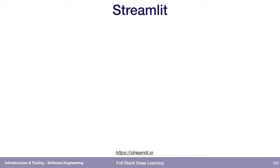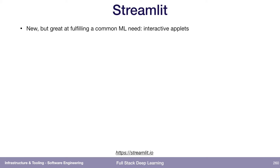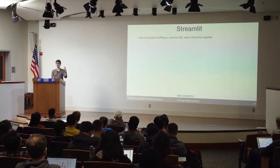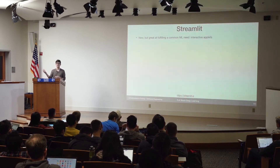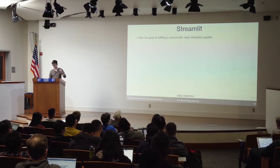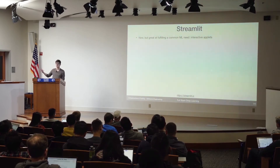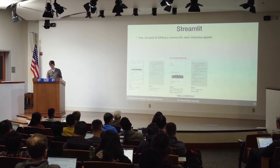I want to give a shout out to an app that was just released a couple of months ago called Streamlit. It's pretty great at fulfilling a need that comes up very often in data science workflows: you've got something working and you want to share it with your team or just use it yourself — maybe there's a slider you can slide around, or different images you can load in and run your model on. How do you package that up and share it with other people?